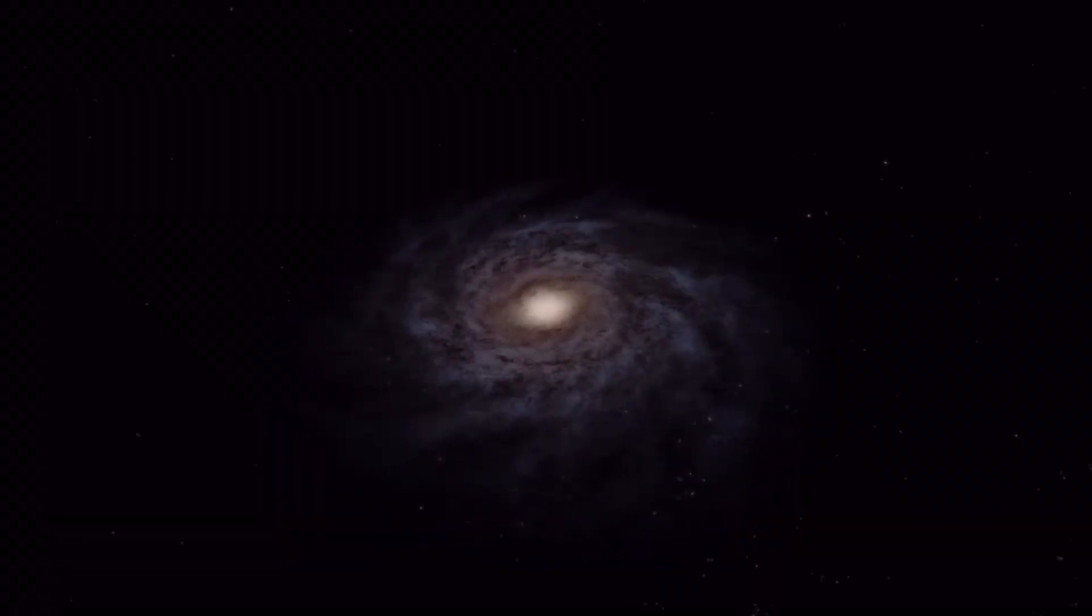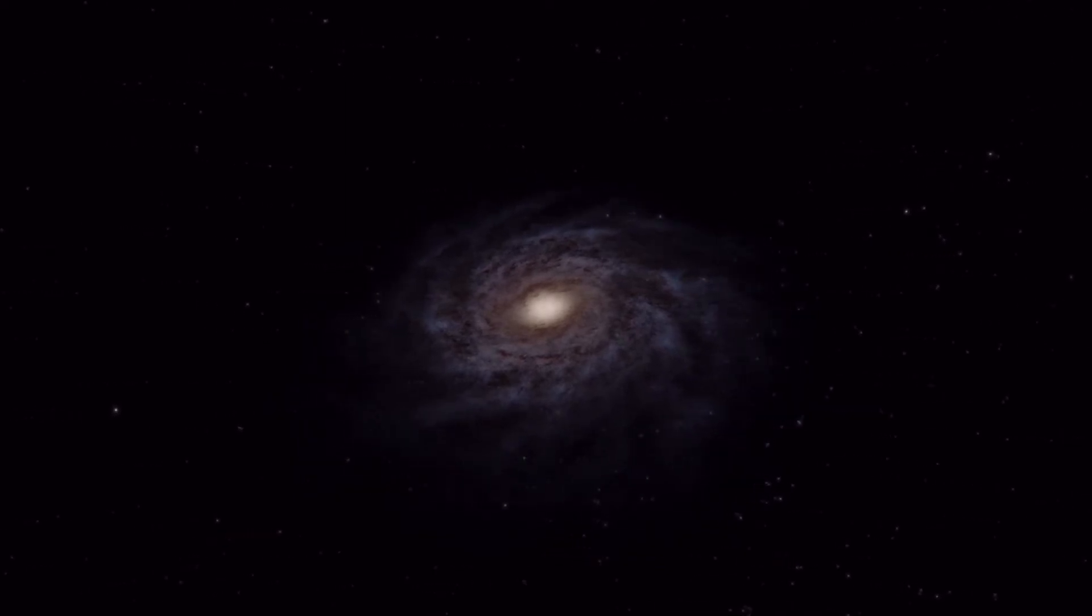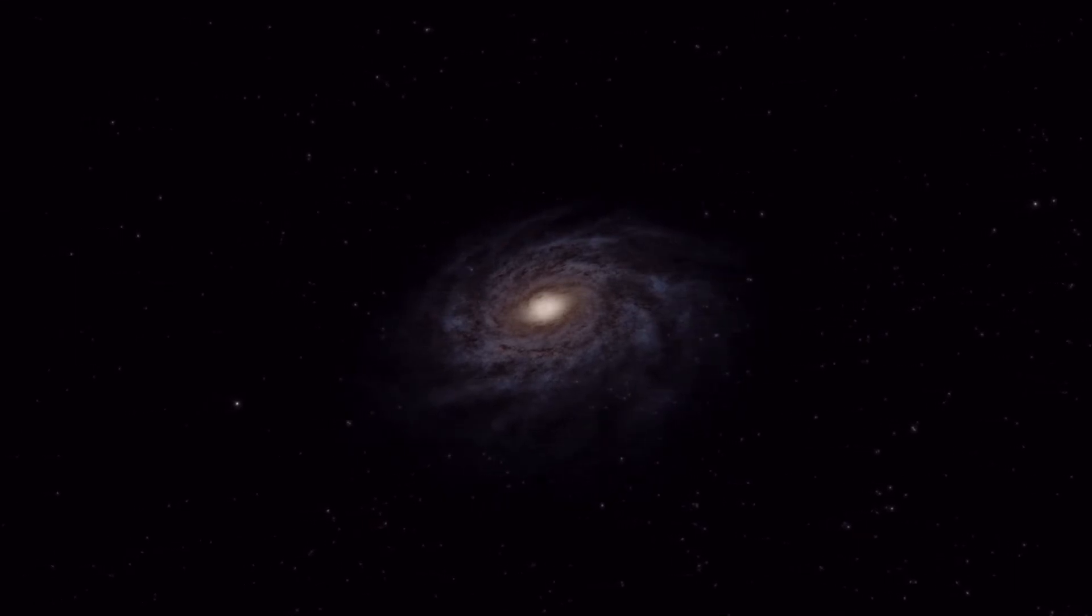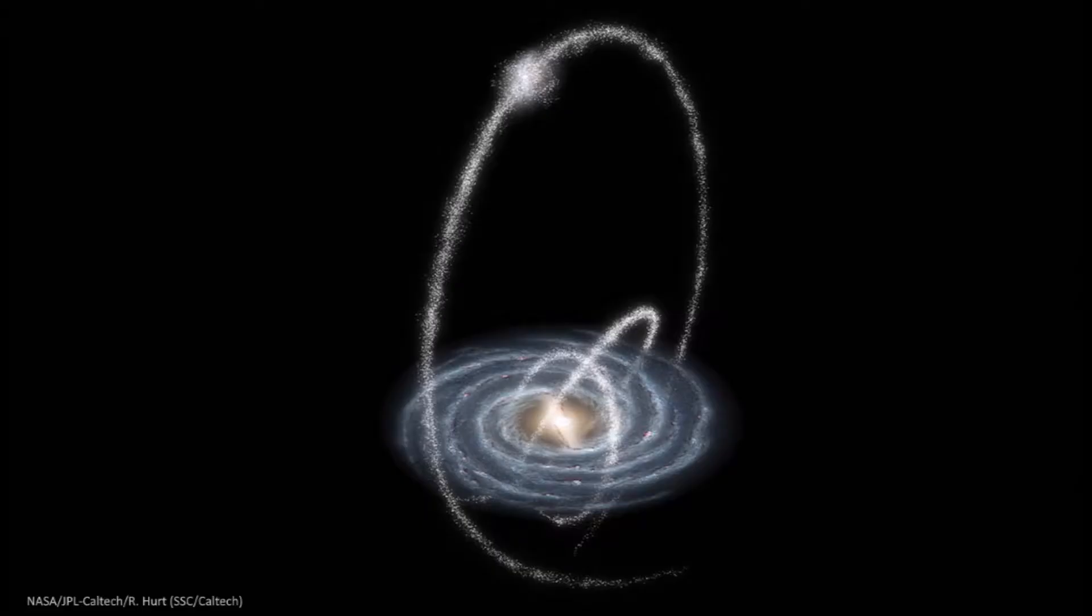Around our galaxy, there are some larger structures that are hard to see, but nonetheless exist. The Milky Way actually has three rings of stars around it, and these likely come from past galactic interactions.